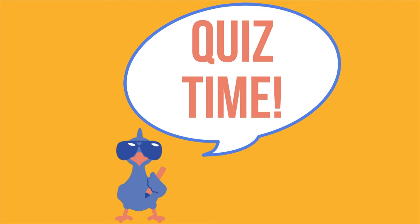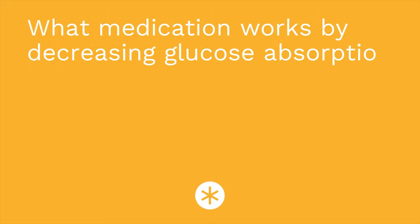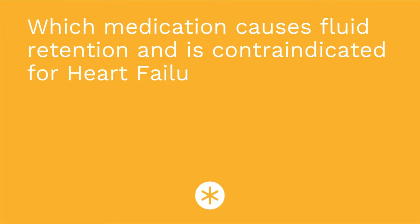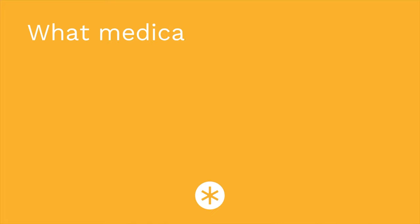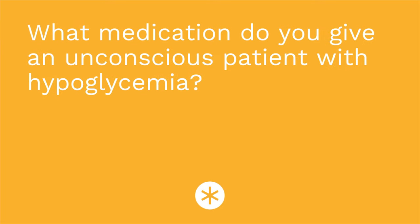Time for a quiz — I have three questions for you. Question one: what medication works by decreasing glucose absorption in the GI tract? The answer is acarbose. Question two: which medication causes fluid retention and is contraindicated for heart failure? The answer is pioglitazone. Question three: what medication do you give an unconscious patient with hypoglycemia? The answer is glucagon.